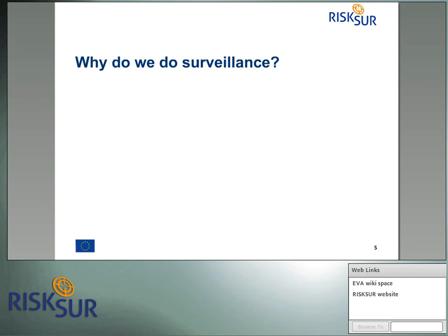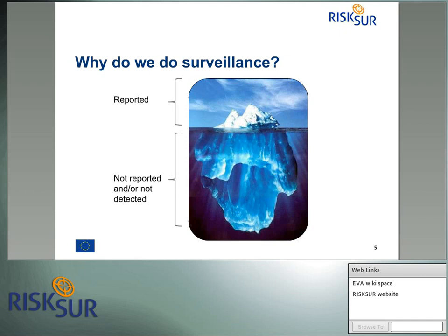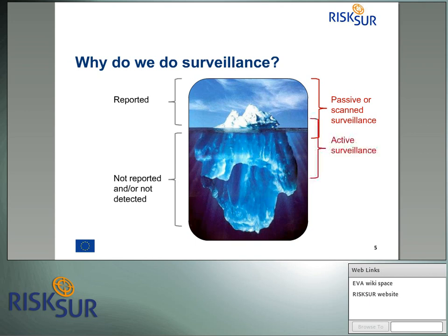Why do we do surveillance? Surveillance is about identifying diseases — this is the iceberg paradigm. Some cases are reported and some are not detected. Passive or scan surveillance allows us to see what is at the top of the iceberg, and active surveillance allows us to see part of what is not reported, but there is always a portion that will never be detected. Evaluation of surveillance allows us to define corrective actions to improve both passive and active surveillance, increasing the proportion of cases detected.